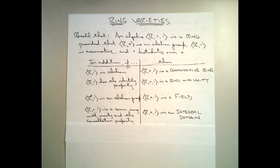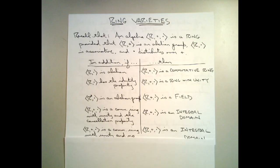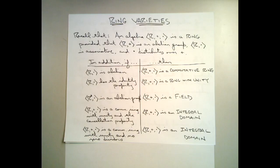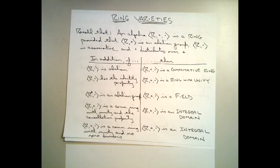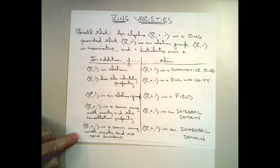If in addition to the properties of a ring we have that the ring is a commutative ring with unity and instead of the cancellation property we have no zero divisors, we call that an integral domain as well. Why the two definitions? Well, in the last video you may recall that in a ring having the cancellation property is equivalent to having no zero divisors. So these are really describing exactly the same thing. But sometimes it's more convenient to think of it one way and sometimes the other.